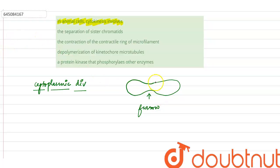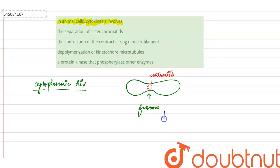This formation of furrow is formed due to the presence of our contractile ring. What happens due to the presence of our contractile ring? The contractile ring has contractibility property that helps in the formation of the furrow, which ultimately causes the furrow to deepen and two cells are formed.